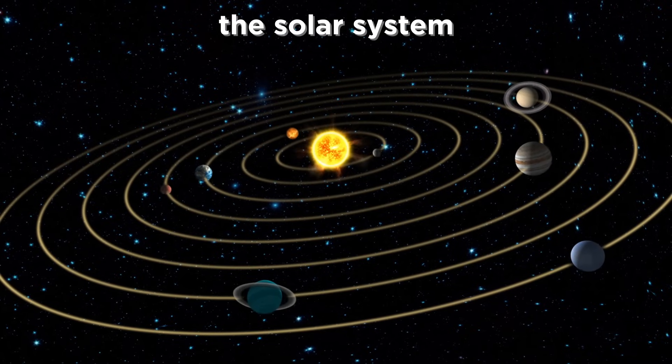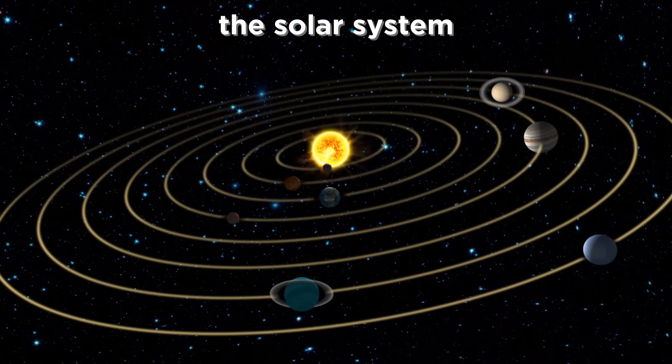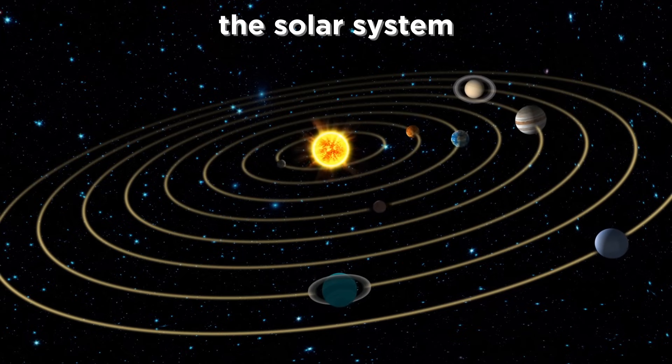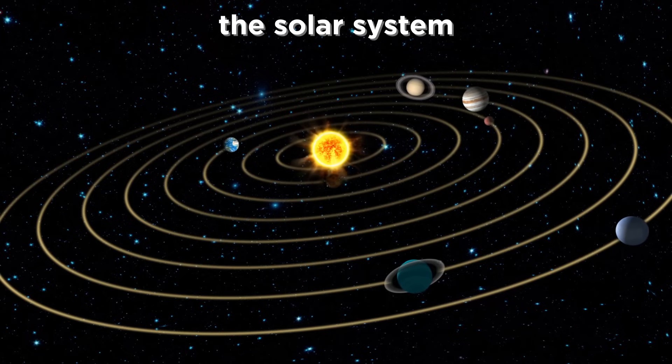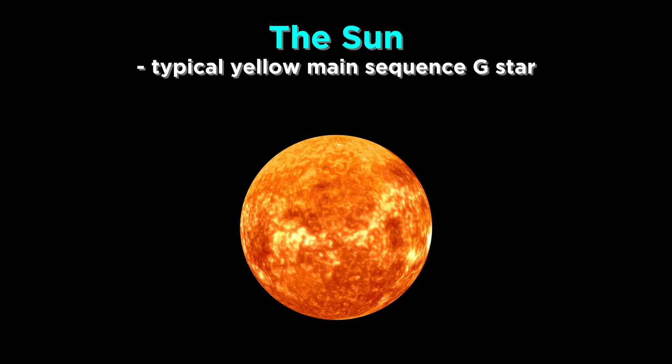Later in the series, we will devote an entire chapter to each major body in the solar system, but let's just briefly describe some of these objects right now. First, there is the sun. This is a typical G star, a yellow main sequence star, as we mentioned. It is a Population 1 star, as it is relatively new, having formed from a cloud of gas and dust which contained significant amounts of material that had been ejected from the death of other older stars.